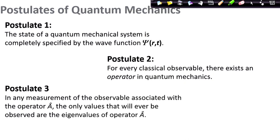Everything you need to know about the system is in this state function or wave function. The second postulate told us that for every classical observable in quantum mechanics there exists an operator. The third postulate said that when you make a measurement corresponding to a quantum mechanical operator A, the only values that will ever be observed are the eigenvalues of operator A. In this context, we learned how to determine eigenfunctions and eigenvalues of different operators, because eigenvalues are the only quantities going to be observed in an experiment.